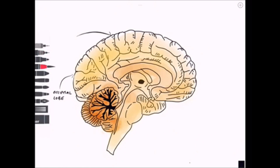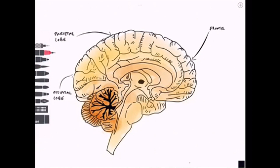Superior to that we have the parietal lobe, which is important for dealing with sensory information, although it's worth mentioning that it's not dealing with special sensory information. At the front of course we have the frontal lobe, important for working memory, reasoning and problem solving.